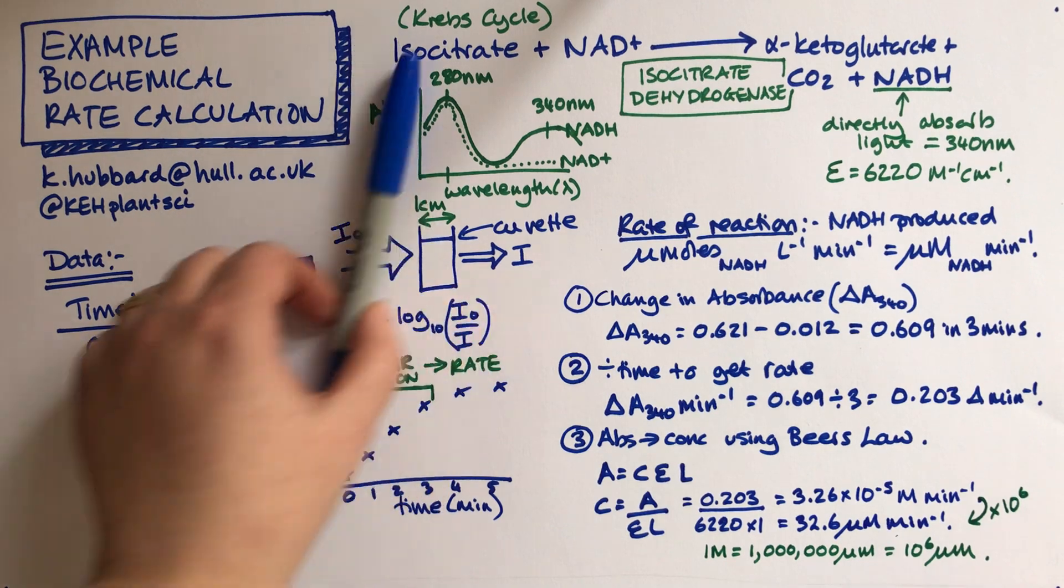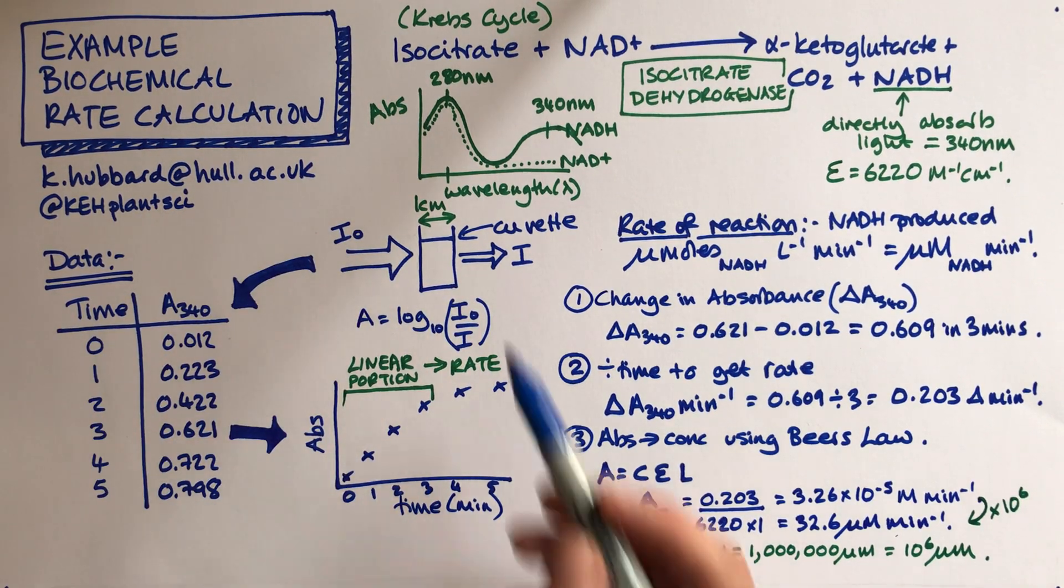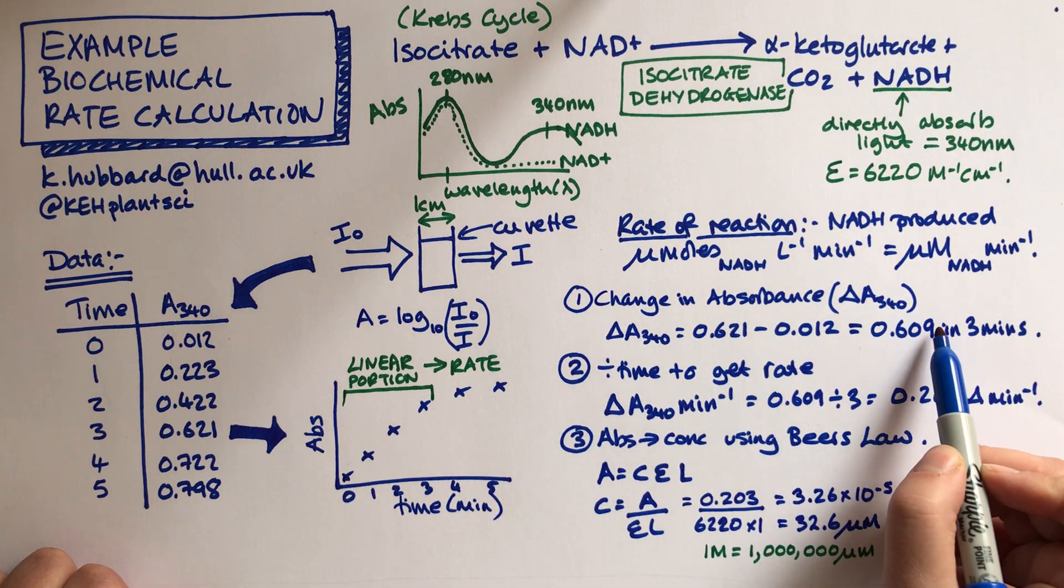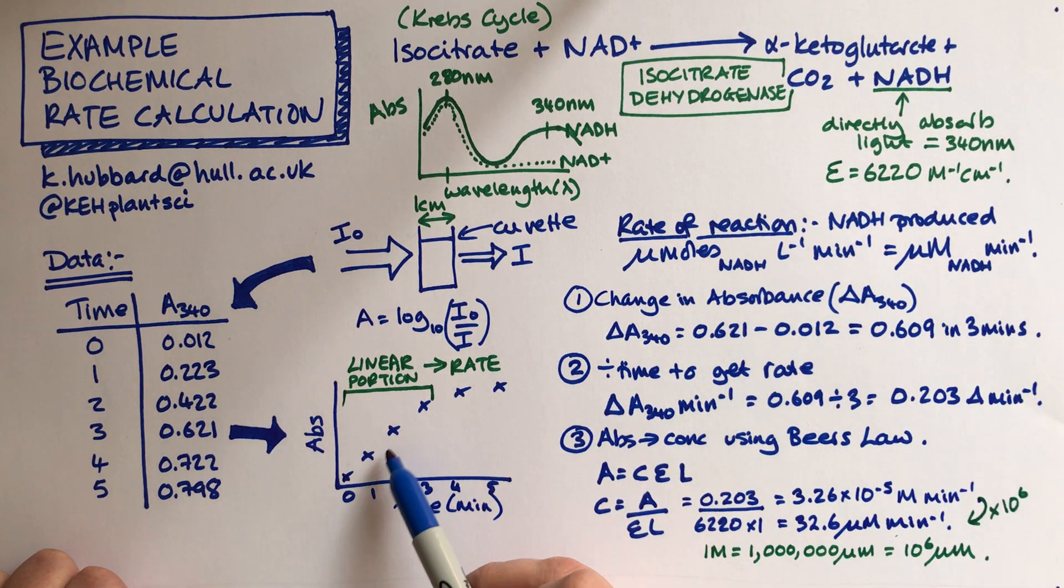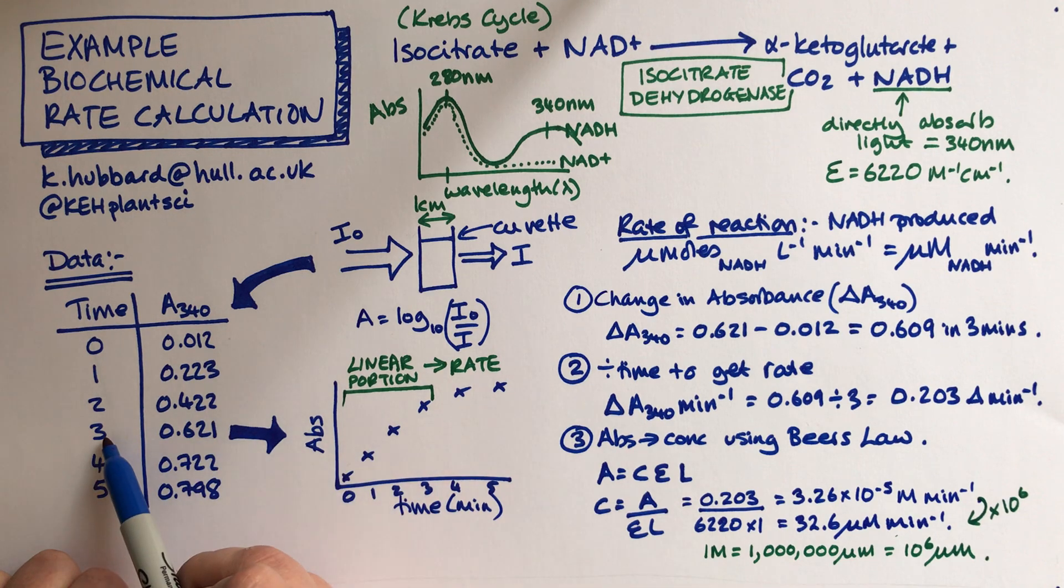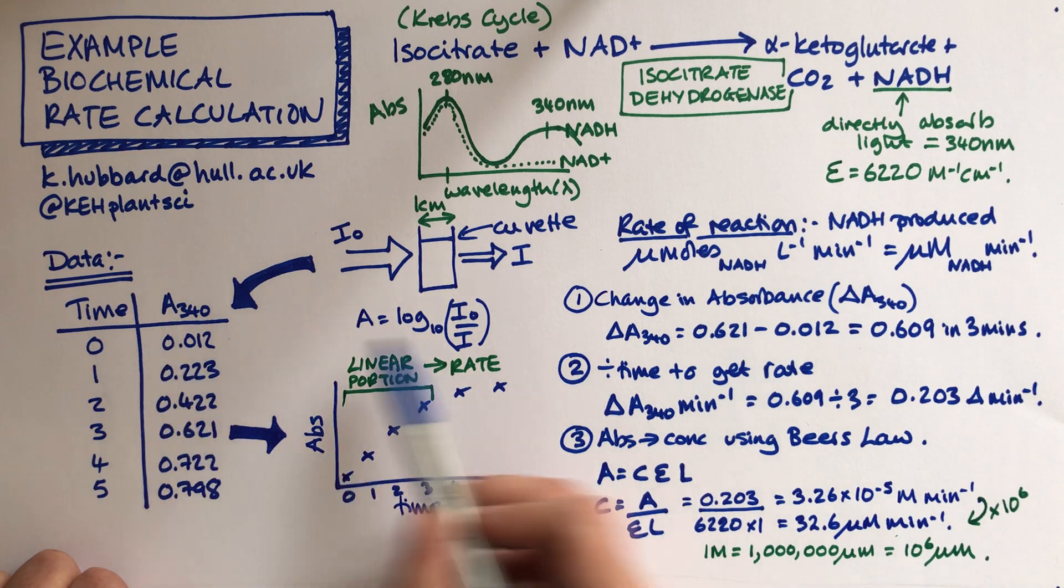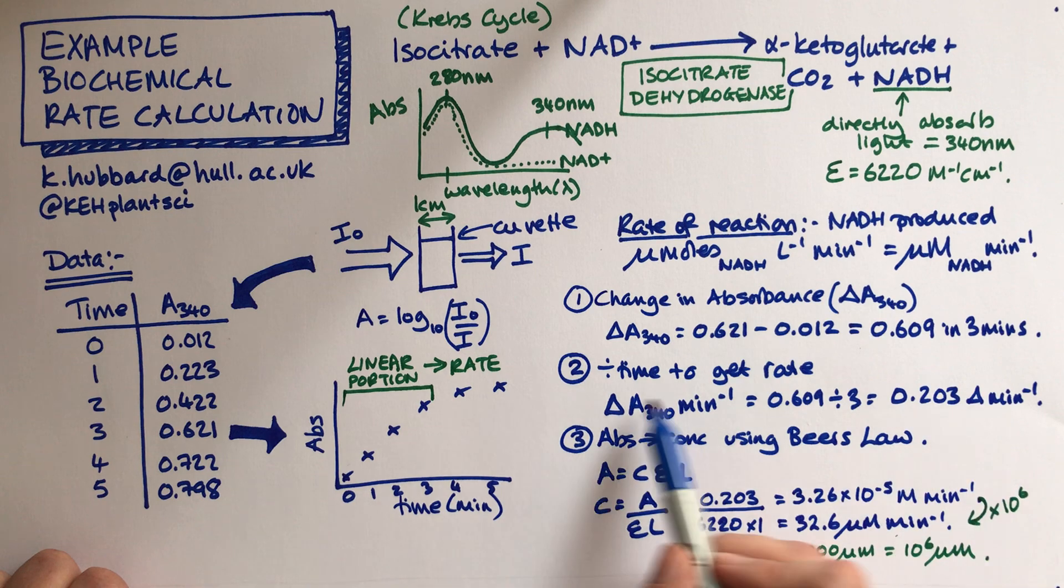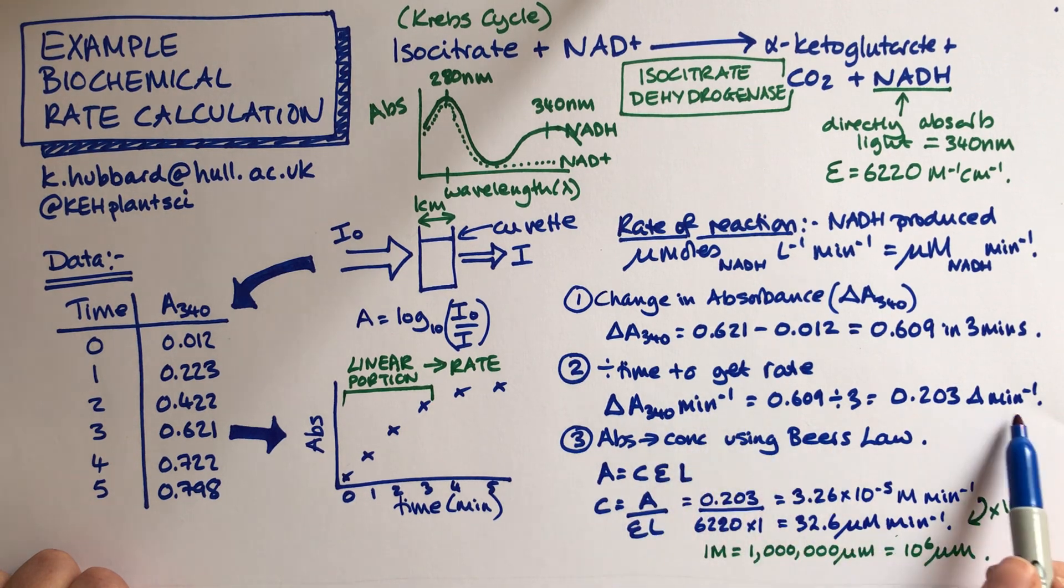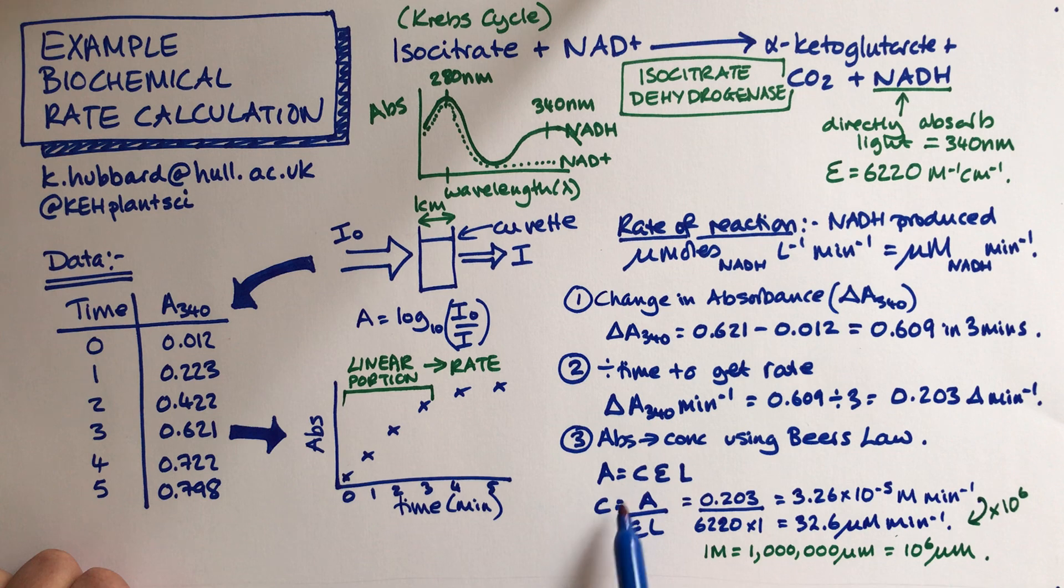So there's three steps to our calculation once we've checked what we're doing. The first thing is our change in absorbance. The first three minutes look like the best on the graph. So we do time at three minus time zero. We then divided by the number of minutes, so in that case that was three minutes to get a rate. And then we use Beer's Law. So A equals C epsilon L. Rearrange that and put the numbers in to get our answer. And then the last thing to do is to convert it to micromolar at the end of the calculation.